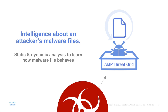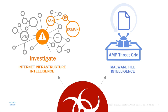AMP Threat Grid is a malware analysis platform that powers your existing security infrastructure. It combines static and dynamic analysis with threat intelligence into a single solution so that you can quickly understand what malware is doing or attempting to do, how large a threat it poses, and how to defend against it. The intelligence about an attacker's internet infrastructure from Investigate, combined with Threat Grid's malware file intelligence, truly provides the most complete view of the infrastructure used in an attack, enabling your security team to better defend, detect, and remediate threats.